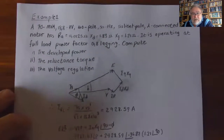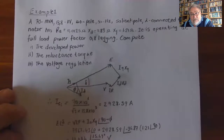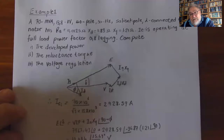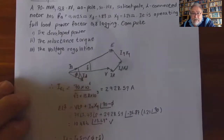Next example: A 70 MVA, 13.8 kV, 40-pole, 50 Hz salient pole star-connected alternator has armature resistance of 0.0125, direct axis reactance Xd = 1.3, and Xq = 1.21. It is operating at full load at a power factor of 0.8 lagging. We must compute the developed power, reluctance torque, and voltage regulation.